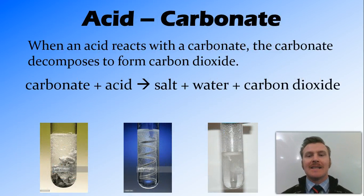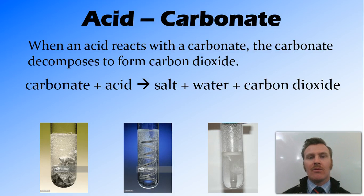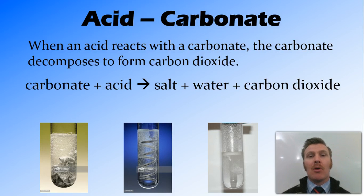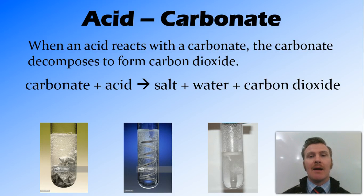Now we're going to look at the acid-carbonate reaction. When an acid reacts with a carbonate — and in particular we're usually talking about a metal carbonate — the carbonate decomposes and forms carbon dioxide. This decomposition of the carbonate is one of the times where we take our polyatomic ion and it actually gets ripped apart. It doesn't happen very often, but the decomposition of a carbonate is one of those cases.